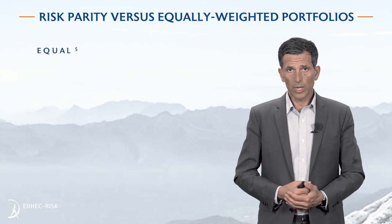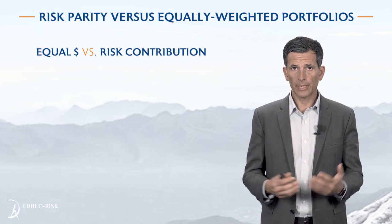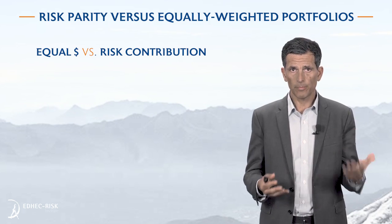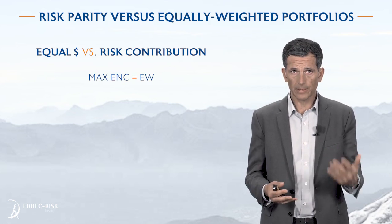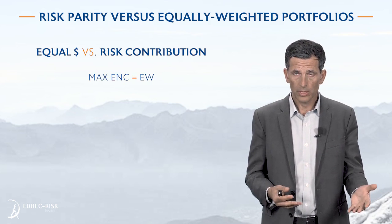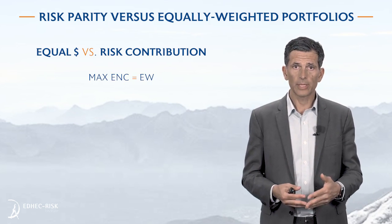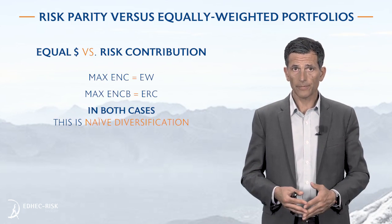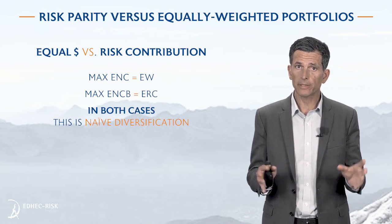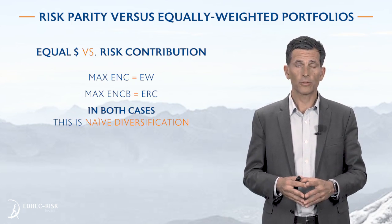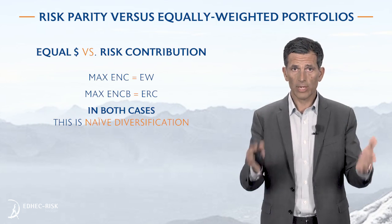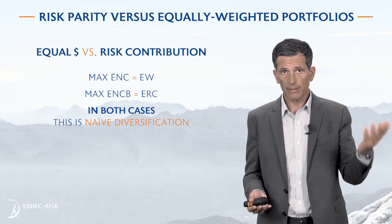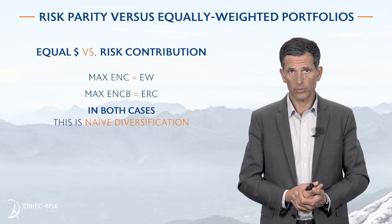A few comments about the risk parity portfolio in comparison with the equally weighted portfolio. The equally weighted portfolio is a max ENC portfolio — max effective number of constituents — while the risk parity portfolio is a max effective number of correlated bets. In both cases, we have to keep in mind that these are naive diversification strategies. We are not trying to maximize the Sharpe ratio; we are just trying to build well-balanced portfolios, either in terms of dollars or in terms of risk contributions.